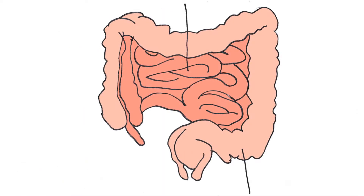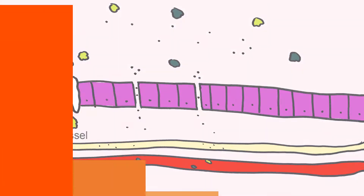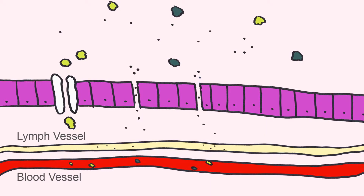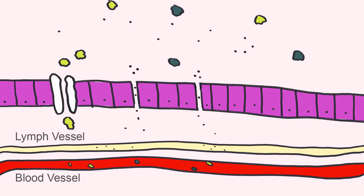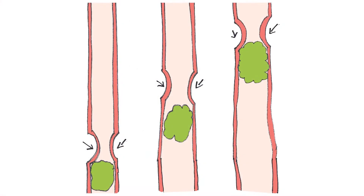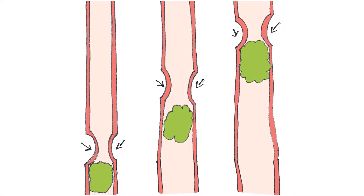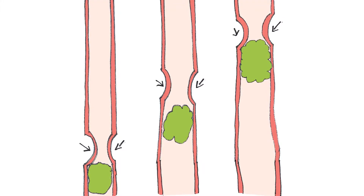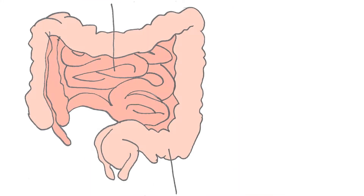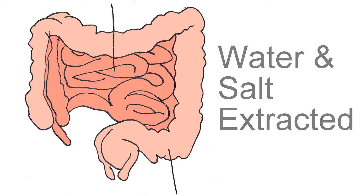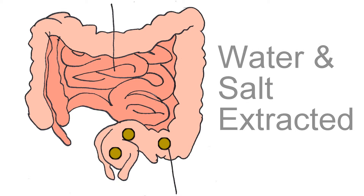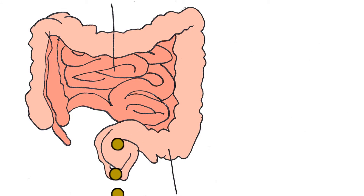The food then enters the small intestine, which digests the food and absorbs nutrients. The nutrients are absorbed into the bloodstream and into lymph vessels. The food is moved through the GI tract from the small intestine to the large intestine via peristalsis. At the large intestine, water and salt from the stool is extracted and feces are stored until being expelled from the body via the anus.